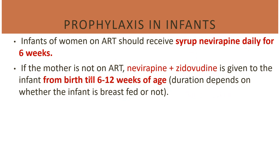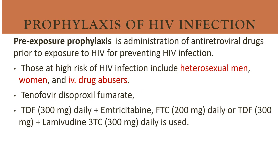Duration of infant prophylaxis depends on whether the infant is on breast milk or not. For pre-exposure prophylaxis in conditions with high risk of HIV infection — including heterosexual men, women, and IV drug abusers — a two-drug combination should be given daily: tenofovir disoproxil fumarate 300 mg daily plus emtricitabine 200 mg daily. This combination, or tenofovir plus lamivudine, should be given daily.